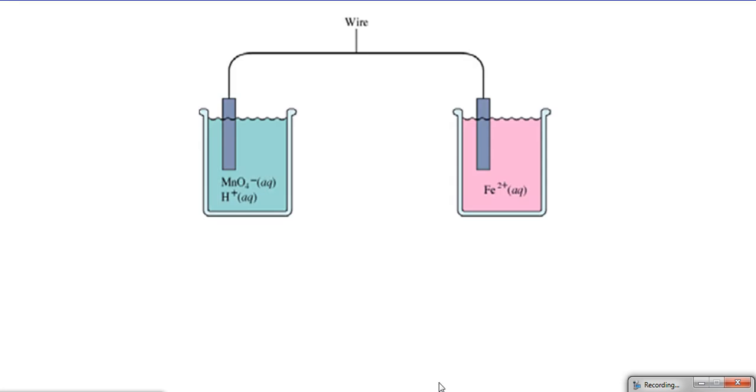In order to do that, we put them into separate cells called half cells. In each cell we put an electrode attached to a wire. This wire and electrode allow the electrons to flow through them between each species.